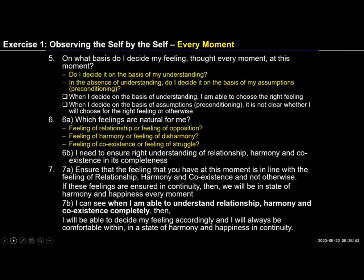In step six, we asked which feelings are naturally acceptable to me, because I have to see what I need to align my feelings to. We found that the feeling of relationship is naturally acceptable, not the feeling of opposition. Feeling of harmony is naturally acceptable, not disharmony. Feeling of coexistence is naturally acceptable, not feeling of struggle. Therefore in step 6b, we concluded that we need to ensure right understanding of relationship, harmony, and coexistence in completeness. Only then will we be able to have that feeling.